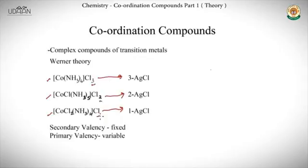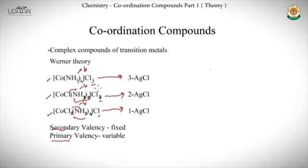These differences are in the outside valency — outside the complex entity. We can say that primary valency is variable and secondary valency is fixed. Inside the coordination entity, we have six ligands in each case: 5+1, 4+2, or six NH3 ligands. Outside the complex, the number of chlorine ligands varies, so we call it variable primary valency, while secondary valency is fixed.